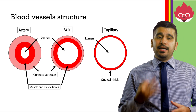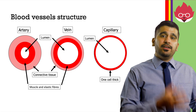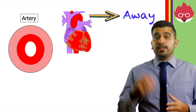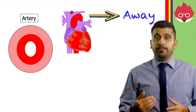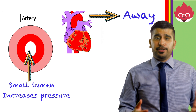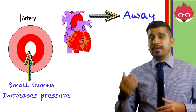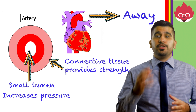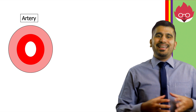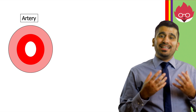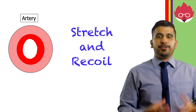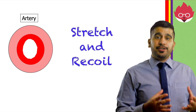There are three main types of blood vessels: arteries, veins, and capillaries. In the artery, blood moves at high pressure away from the heart. The lumen of the artery is small, which is essential for generating high pressure. Arteries also have connective tissue such as collagen which provides strength. They have thick muscular walls with elastic fibres that allow the arteries to stretch and recoil, maintaining the pressure in them.